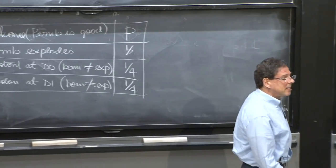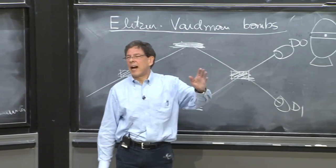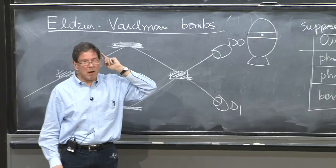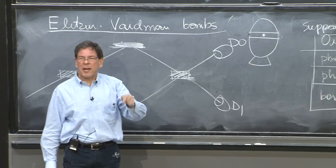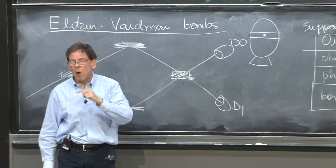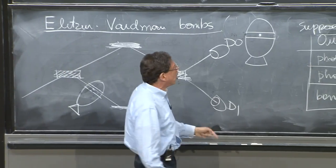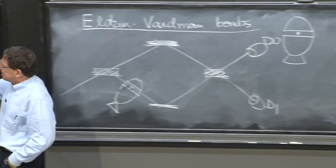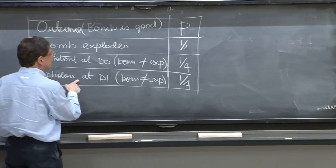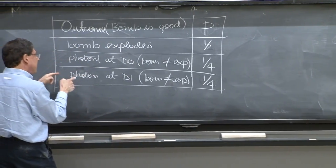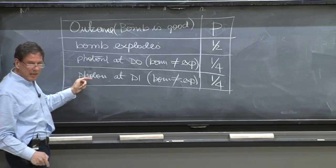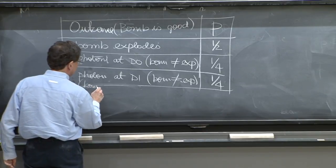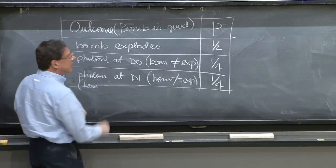But here is the catch now. Yes, half of the bombs exploded. We're sorry about that. But if the bomb doesn't work, there is no way a photon can reach D1. Because if a bomb doesn't work, all photons go to D0. So the fact that some photons a quarter of the time, 25% of the time, reach D1 implies that photon is at D1, and bomb did not explode. But the bomb is good.